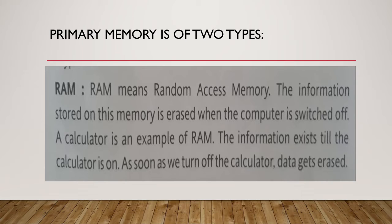The information stored on RAM is erased when the computer is switched off. The best example of RAM is a calculator. We can see the numbers as soon as the calculator is on. When the calculator is switched off, we are not able to see any of the numbers — all the memory is erased. The information exists only till the calculator is on. So the calculator is the best example of RAM.